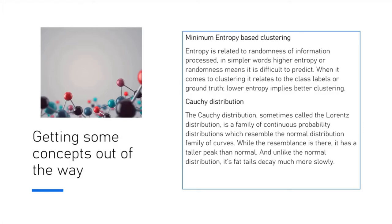Before we get into the paper, there are some key concepts important for understanding. Two concepts have been used heavily in the paper. One is minimum entropy-based clustering. Entropy, as you understand, is the randomness of information process. We've seen entropy and information gain in decision trees, and it's the same thing here. In simpler words, higher entropy or randomness means difficult to predict. When it comes to clustering in relation to class labels, ground truth or lower entropy implies better clustering.